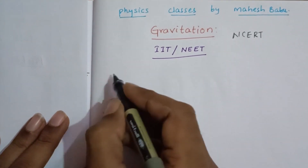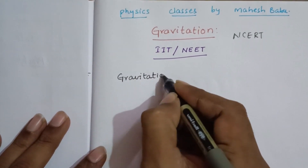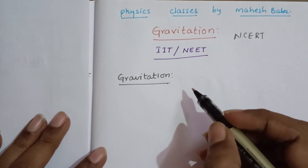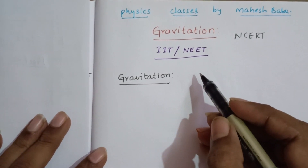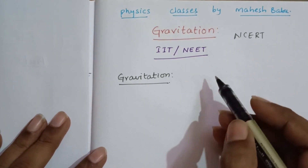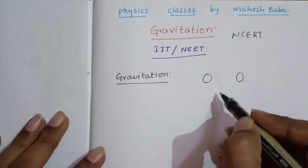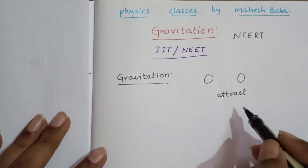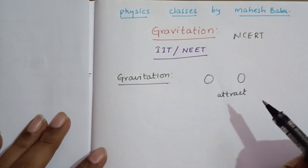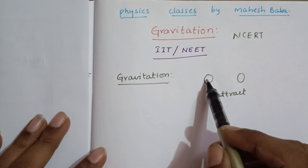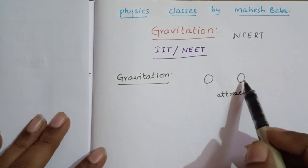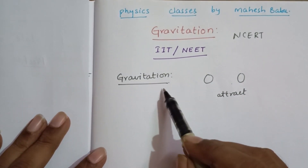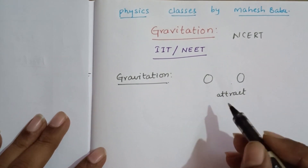First, we will discuss gravitation. What is meant by gravitation? In the universe, between every two objects, there is an attracting force. That attracting force is known as gravitation, and it is also called gravitational force.